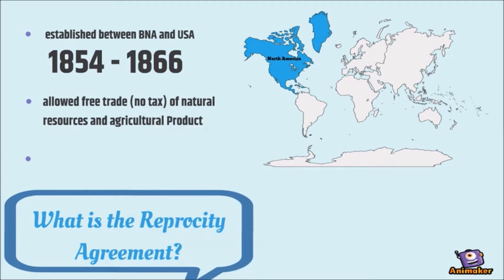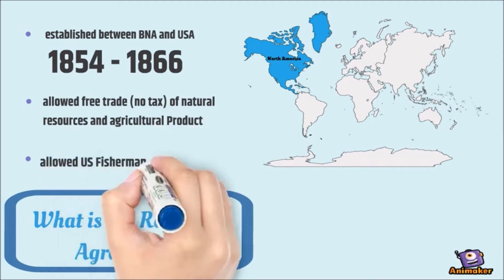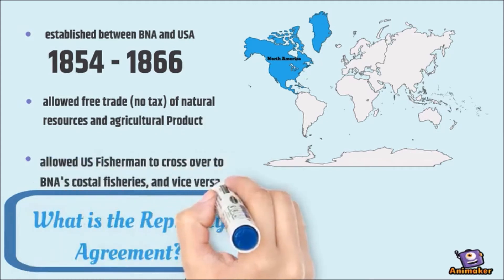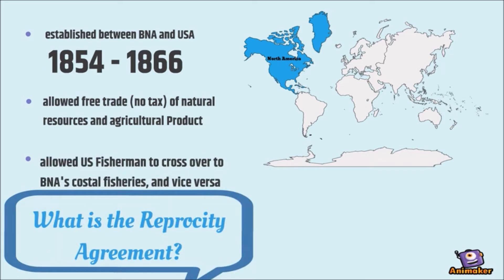Free trade meaning no taxes. It also allowed U.S. fishermen to fish in British North America's Atlantic coastal fisheries, and for British North American fishermen to fish in U.S. coastal waters.